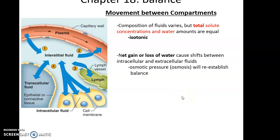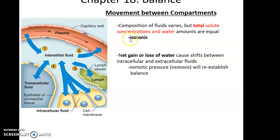The composition of fluids varies, but it is the total solute concentration that matters - we want isotonic solutions in all different compartments. Whenever we have a net gain or loss of water, this causes shifts between compartments - movement of water from, say, the interstitial fluids to the intracellular fluids, lymph fluid, or blood plasma - looking to re-establish balance and return all compartments to an isotonic state with the same total solute concentration.